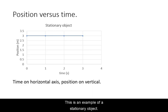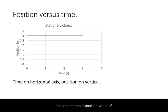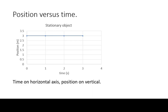This is an example of a stationary object. Note, this object has a position value of 3 meters at 0 seconds and at all subsequent times.